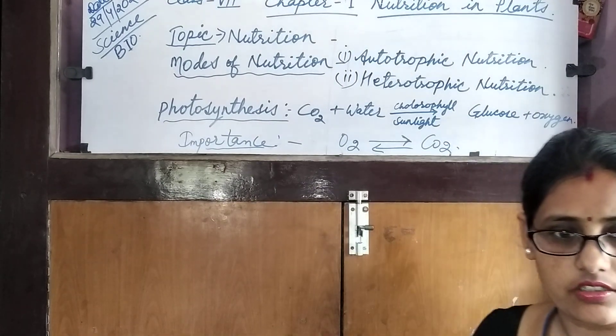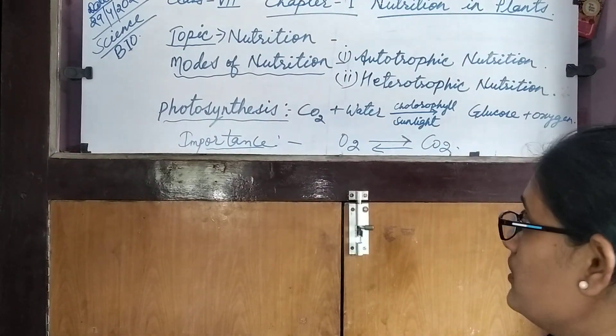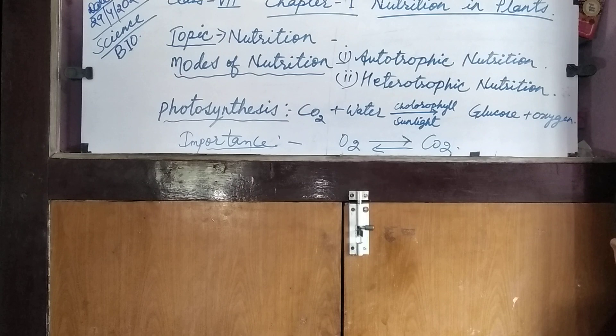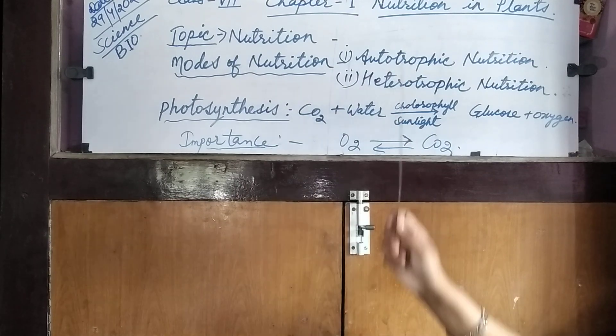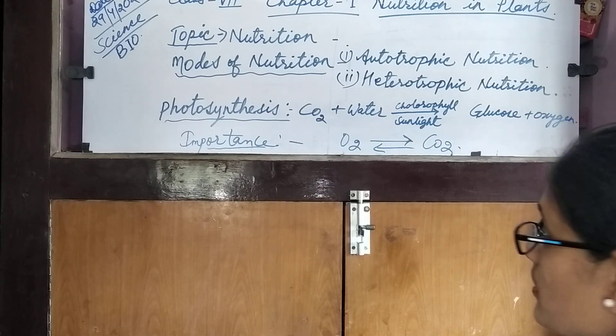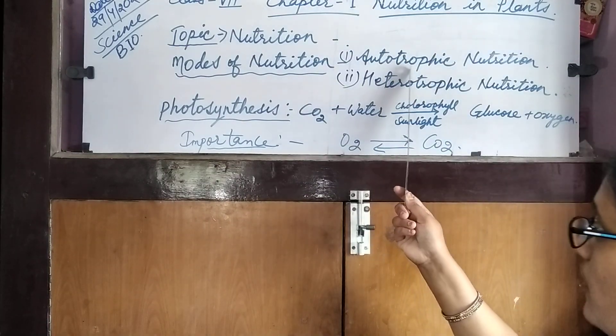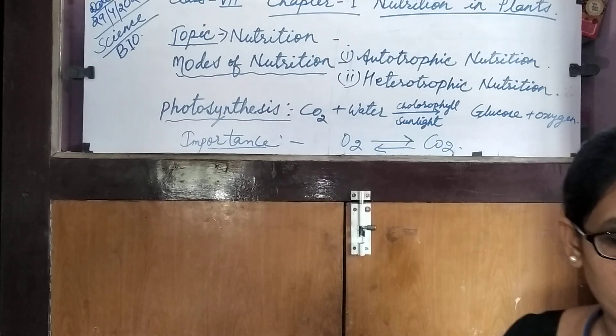In living organisms present on earth, there are two modes of nutrition which we study in this chapter. The first mode is autotrophic nutrition and the second is heterotrophic nutrition. Today we'll discuss autotrophic nutrition. 'Auto' means self and 'trophic' means feeding — so it means a self-feeding process.